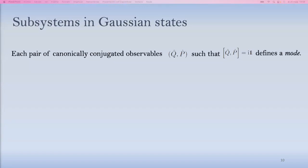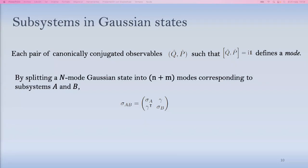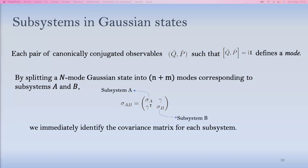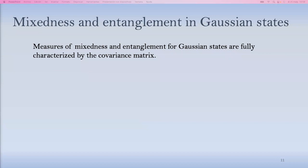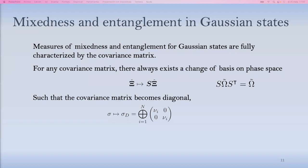So essentially what we're doing is we're replacing this continuum with a discrete lattice of harmonic oscillators motivated by these considerations of cutoffs from the probes and so on. Now, each pair of canonically conjugated observables, Q and P, define what we're going to call a mode. So the field is described by a set of modes. And when we talk about subsystems, they're going to consist of splits of this n-mode Gaussian states into little n, little n plus m modes, so that the covariance matrix splits schematically in this form. And it's very easy to identify the covariance matrix of each subsystem if you organize the variables in this way, because this is just subsystem A and this is just subsystem B. So partial traces are very easy to identify. And measures of mixedness and entanglement for these Gaussian states are fully characterized by the covariance matrix. Again, because you're looking at a Gaussian state, so everything is defined in terms of the two-point function. In particular, measures of mixedness and entanglements are particularly conveniently expressed in terms of this.